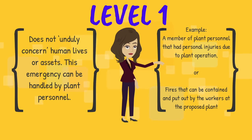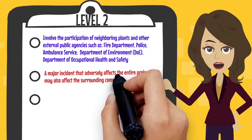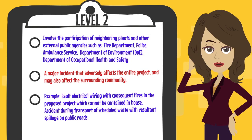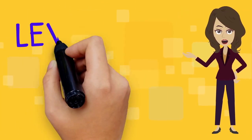A Level 2 emergency is categorized as a situation which significantly concerns human lives and assets and might lead to a more serious incident. It involves the participation of neighboring plants and other external public agencies. Incidents at this level may affect the entire project and the surrounding community — for example, faulty electrical wiring with consequent fires that cannot be contained in-house, or an accident during transport of scheduled waste with resultant spillage on public roads.